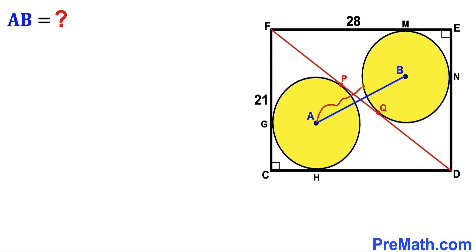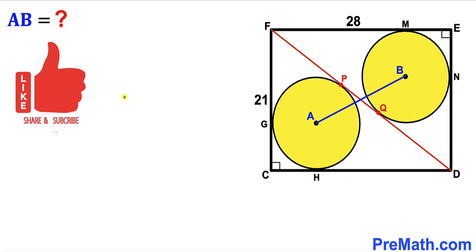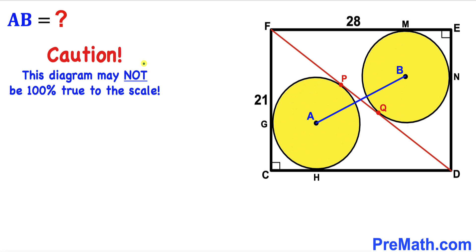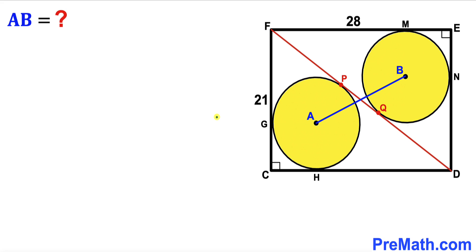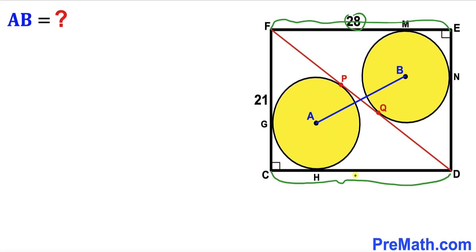In other words, we need to find the length AB. Please keep in mind that this figure may not be 100% true to scale. Since we are dealing with rectangle CDEF, the side length EF is equal to side length CD. If EF is 28, then CD is 28 as well.